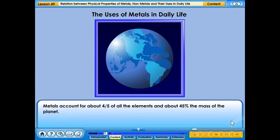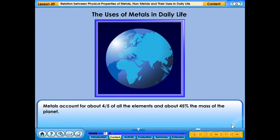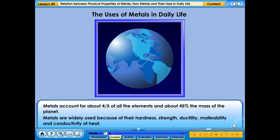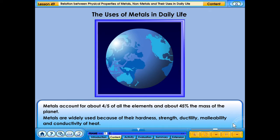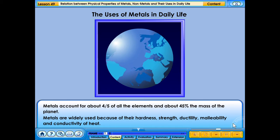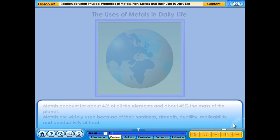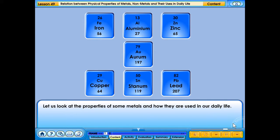Metals account for about four-fifths of all the elements and about 45% the mass of the planet. Metals are widely used because of their hardness, strength, ductility, malleability and conductivity of heat. Let us look at the properties of some metals and how they are used in our daily lives.